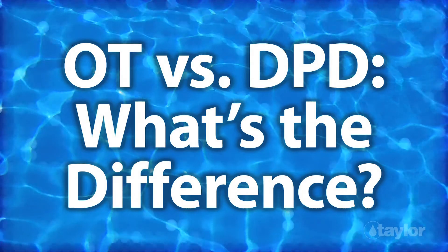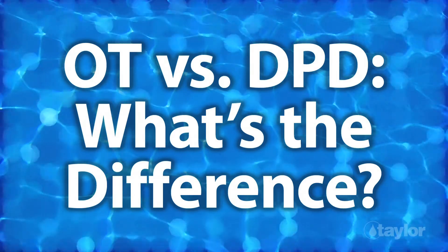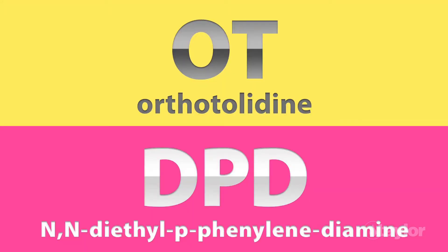OT vs. DPD — what's the difference? Taylor Test Kits offer a choice between the OT and the DPD method for testing sanitizer. OT and DPD are abbreviations for long chemical names that are hard to pronounce. You don't need to know how to say them, but you do need to know how they differ in performance.